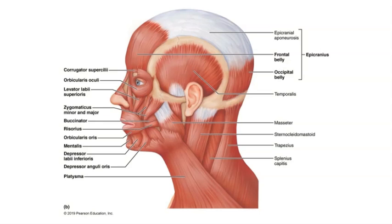The first muscle is the orbicularis oculi muscle. This is a sphincter type muscle that surrounds the eye. When sphincter type muscles contract, they cinch closed the space that surrounds the middle of the muscle, so when this muscle contracts it aids in both blinking and squinting of the eye.